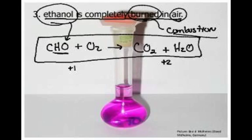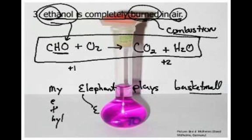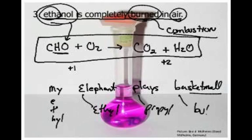All right. It turns out, ethanol, there's this prefix, this is called an organic compound. And we'll talk about that later. But real quick, I want to just give you a mnemonic device. My elephant plays basketball. M stands for methyl, E is ethyl, P is propyl, and B is butyl. The prefix tells you how many carbons are in the compound. So methyl would be one carbon, ethyl is two carbons, propyl is three, and butyl is four.